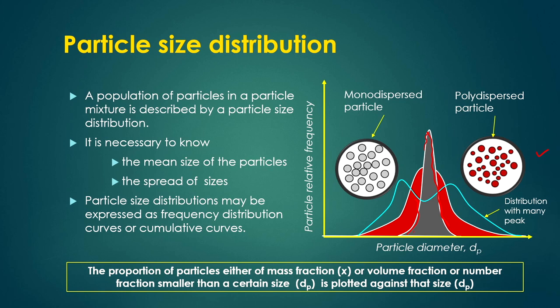We can take the mass of particles for a particular size range, and for different size ranges we can get different masses, then represent it in a graphical form with mass fraction on the y-axis and particle size on the x-axis. This type of distribution will be called volume fraction distribution or mass fraction distribution. If you are representing by number, it will be called number fraction distribution or frequency distribution.